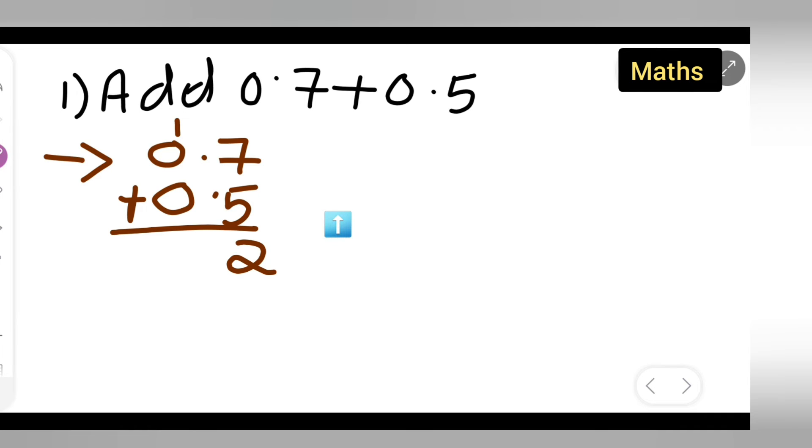Then 0 plus 1 will be 1 only. And since there are two decimal points, the decimal point will be as it is.